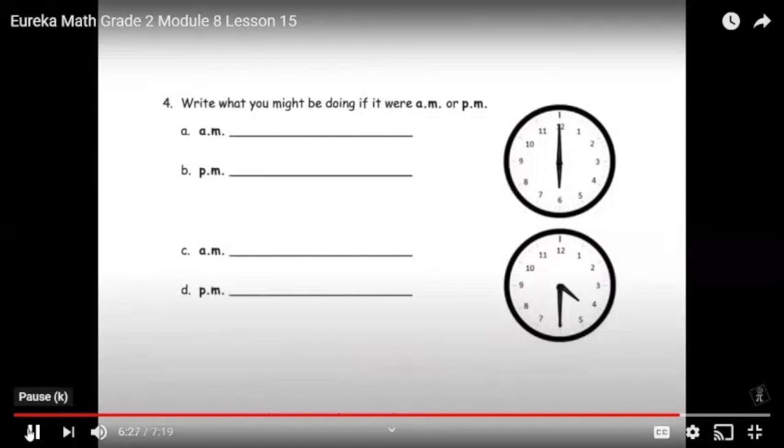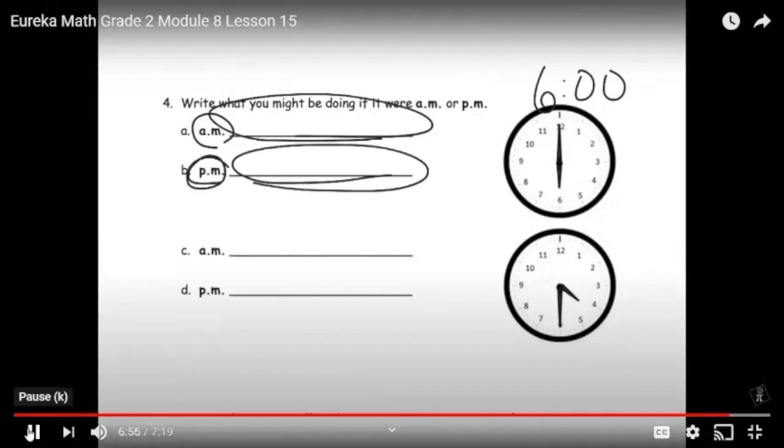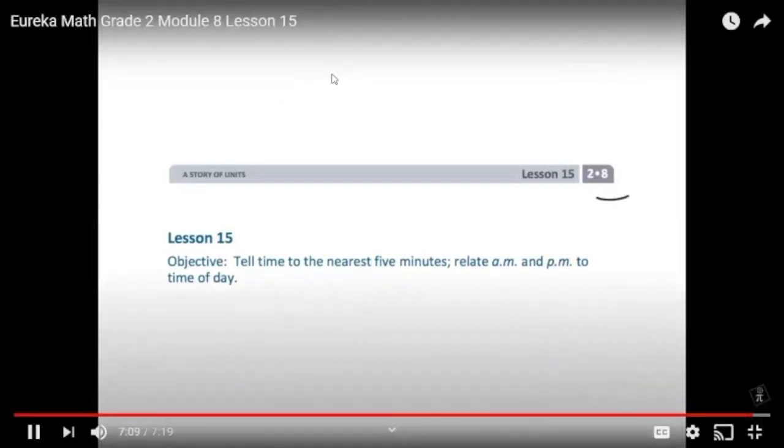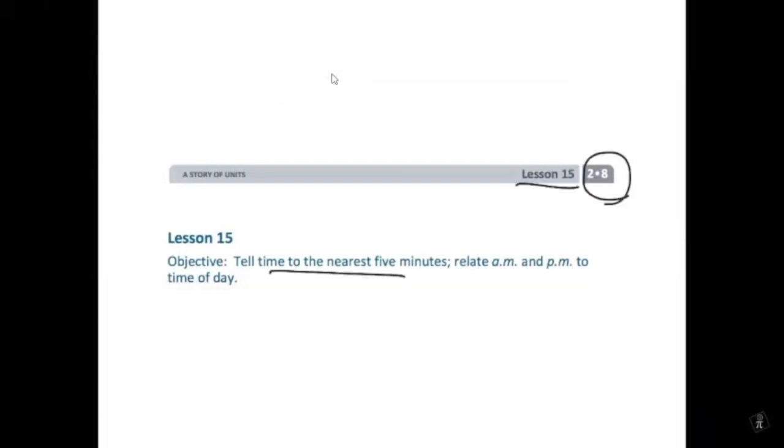Last slide for this video. It says, write what you might be doing if it were AM or PM. So this is where our students look at the clock. And we see that the time is 6 o'clock. But what we're going to do at 6 AM is going to be very different than what we might be doing at 6 PM. So let your students talk about some things that they might be doing at 6 AM versus things they might be doing at 6 PM. And similarly, this clock says 4:30. What might you be doing at 4:30 AM versus 4:30 PM. And that wraps up second grade module 8 lesson 15. We're telling time to the nearest five minutes, but really we're focusing on the meaning of AM and PM.